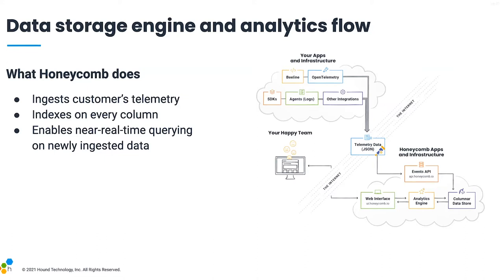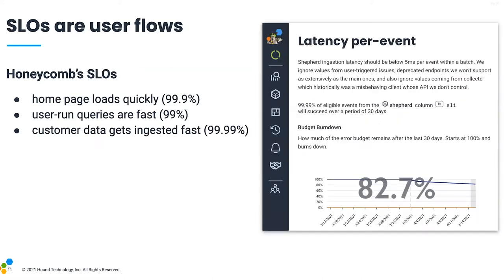So I'm going to give you a slight overview of how that works under the hood, just so that you can believe it. What Honeycomb does is we ingest the telemetry, we store it, and enable real-time querying. Honeycomb's SLOs include: does the homepage load quickly? User-run queries should return results very quickly. And customer data that we're trying to ingest should be stored fast and successfully.